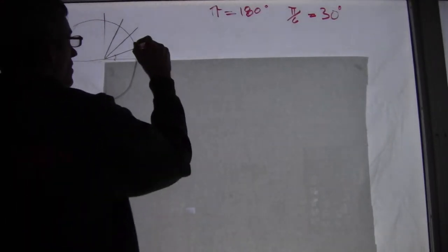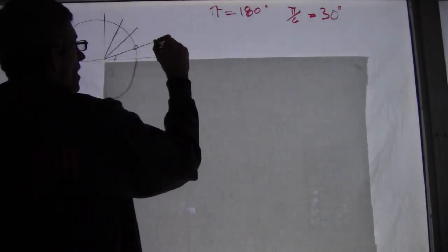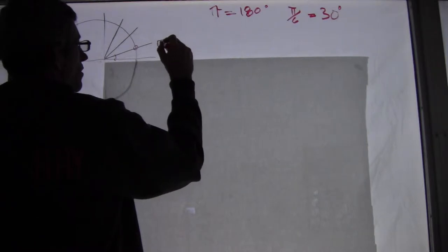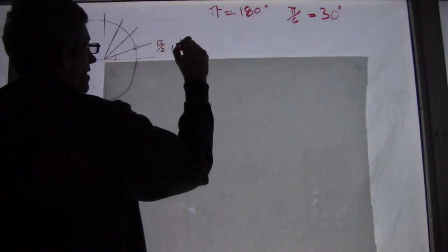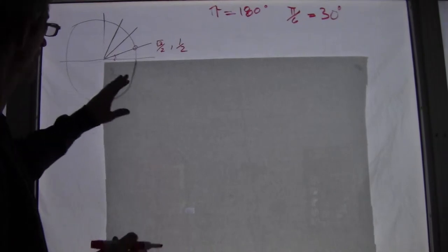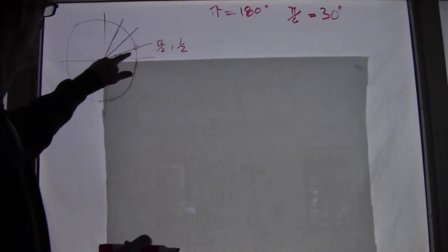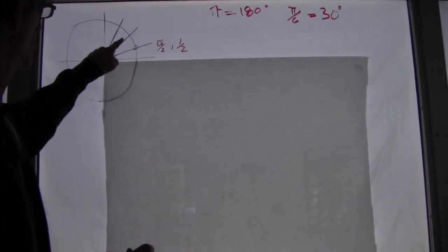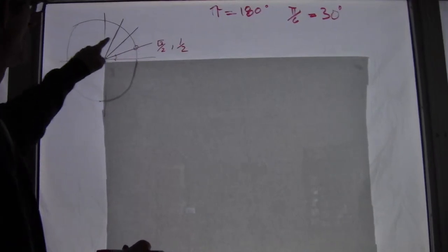So the coordinates right there at that point are going to be square root of 3 over 2 and 1 half. So that's one you're just going to memorize. And if you draw, you can kind of see, I mean my drawing's not great, but 1 half, this should be a little higher up, it's going to be about 1 half up the axis.